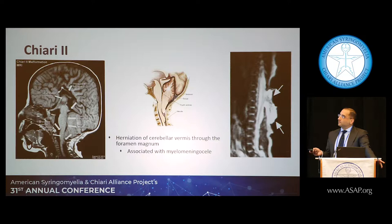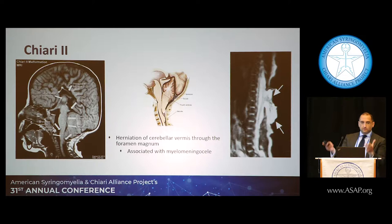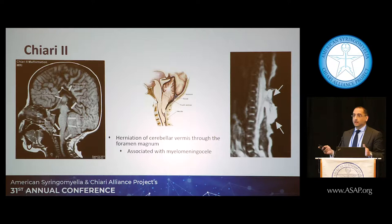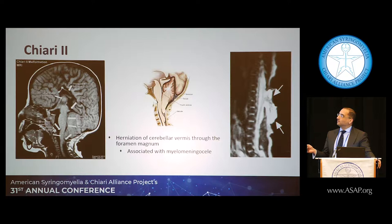Type 2 is associated with myelomeningocele. The way to remember it is there's an opening at the bottom of the spine, so everything sags downward — parts of neural tissue hang out of the lower back. This is seen when babies are first born and usually need repair. Everything gets crowded down and descends below C2, the second spinal bone.